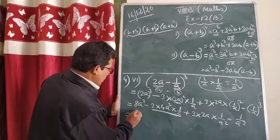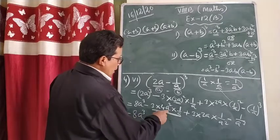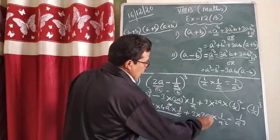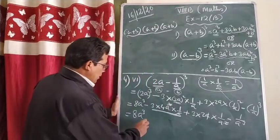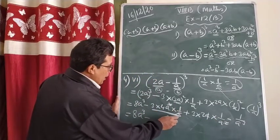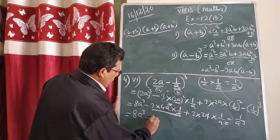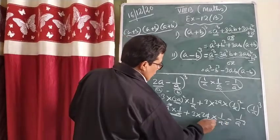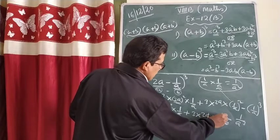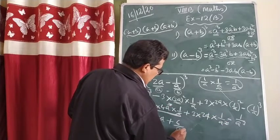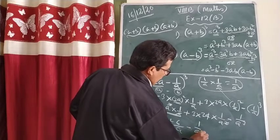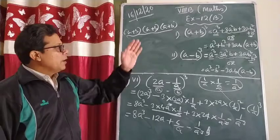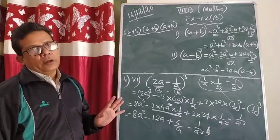Now doing the final calculation: we have 8a³ minus 12a plus 6/a minus 1/a³. This is the answer. These problems are very easy if you apply those formulas and solve them. Thank you so much for today's class.